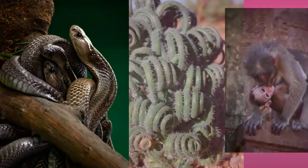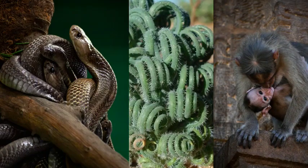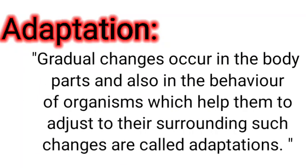We can see a great variety of plants in our surrounding. They can survive in extreme hot as well as cold regions, or in any habitat. So we can say that they are gradually adapted to their surroundings. Adaptation can be defined as gradual changes that occur in the body parts and also in the behavior of organisms which help them to adjust to their surroundings. Such changes are called adaptations.